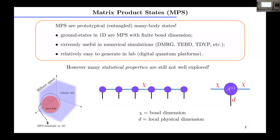It turns out that many statistical properties of MPS are not well explored. Statistical properties means what you should expect from a general typical MPS. In these slides I will often use the graphical language for tensors. An MPS is like a tensor train like this, where each of these boxes are three-index tensors.